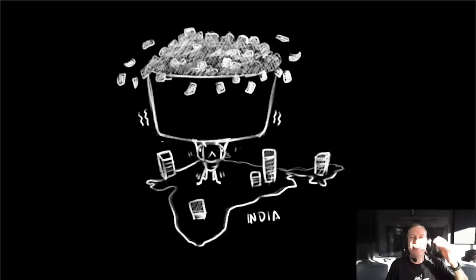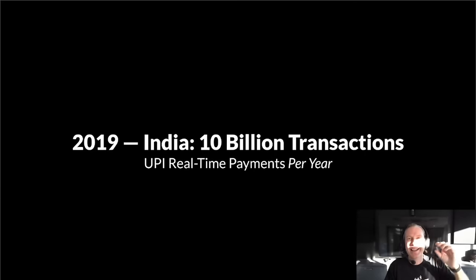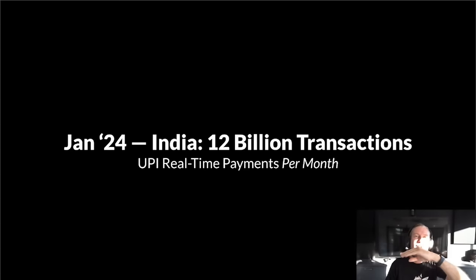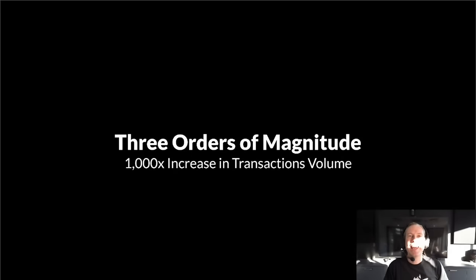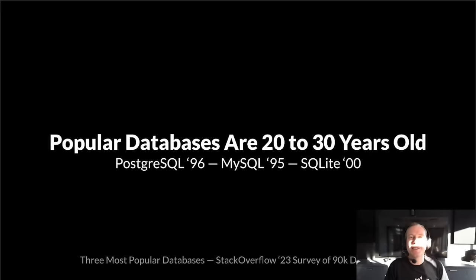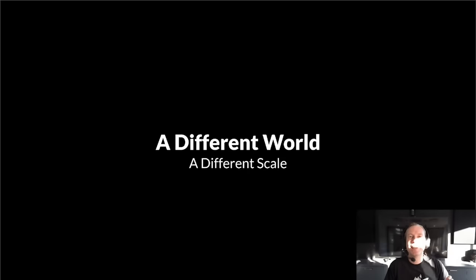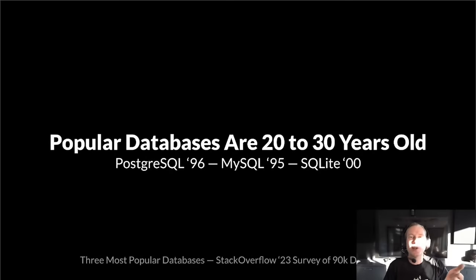Cloud and energy are becoming real time. And then there are real-time payments. Five years ago, India's real-time payment system, UPI, processed 10 billion payments a year. The month of January alone, they did 12 billion. The volume of transactions across several sectors has increased 100 to 1000 times in the last 10 years. And yet the three most popular databases — Postgres, MySQL, SQLite — are 20 to 30 years old, designed for a different world and scale.